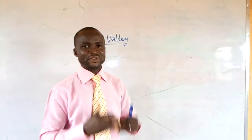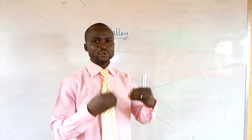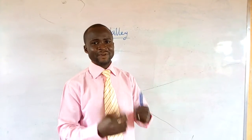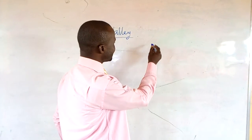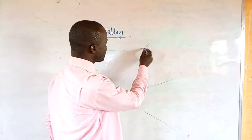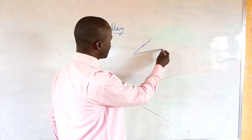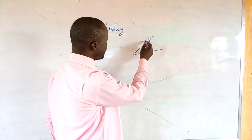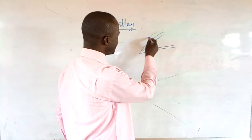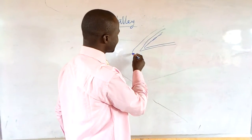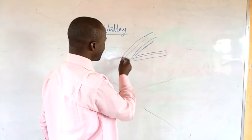How can this valley be represented, or how can it be shown, or how can you know that it is a valley on the topographic map? On the contour lines, you will see a contour line like this on the topographic map. You will see another one like this, and another one like this. All these ones that I am drawing are contour lines.